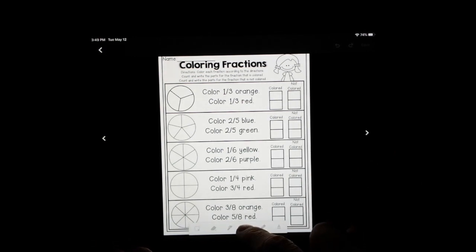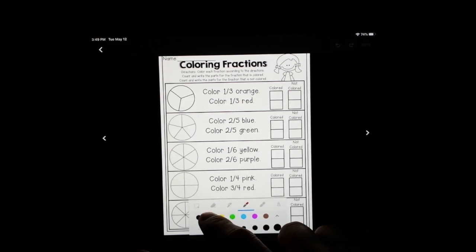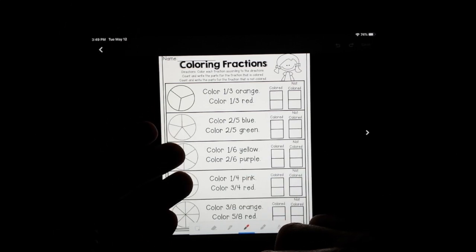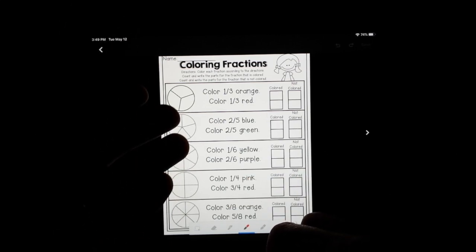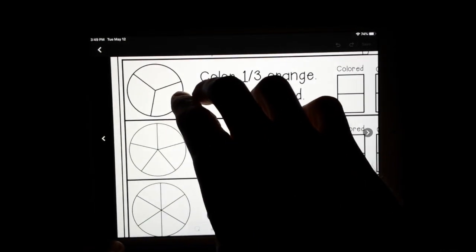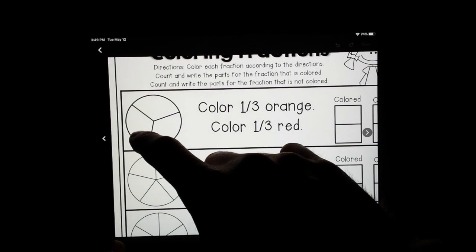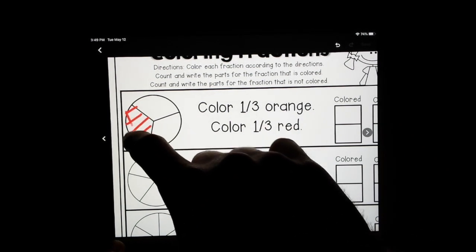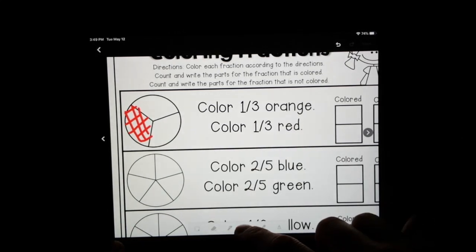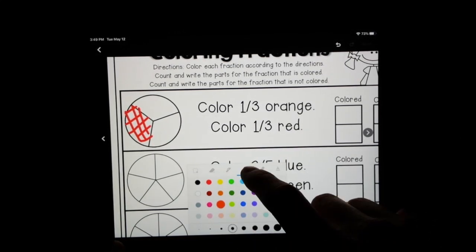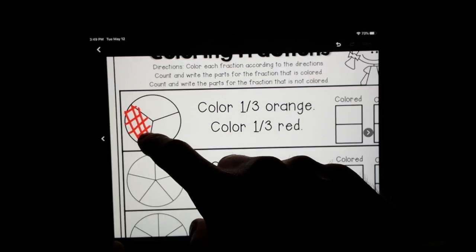This activity, they want you to color a couple of different colors for each fraction, and then identify how much of that fraction is colored in total, and how much of it is still not shaded in. So here we have color one third orange and one third red. Yesterday I didn't know about all these extra colors, so I didn't have orange, but now I know I can find that down here. So I got my red piece, I got my orange piece.